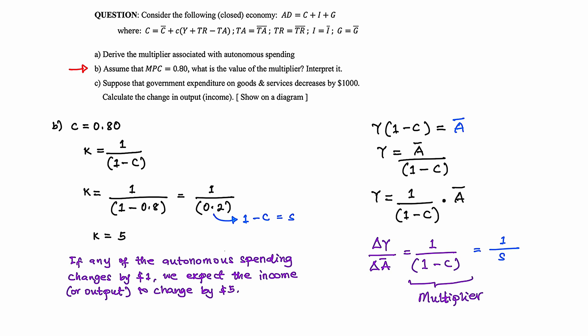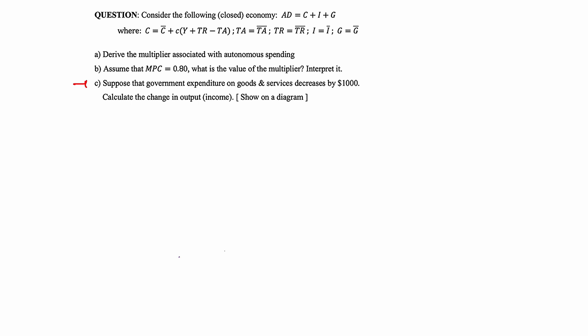Let's move on to question C. Question C says: suppose that government expenditure on goods and services decreases by $1,000 — calculate the change in output and show on a diagram. The change in G is a decrease, so change in G equals negative $1,000. We need to calculate the change in output or income.